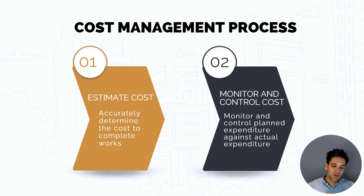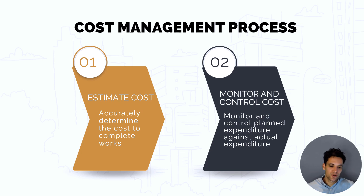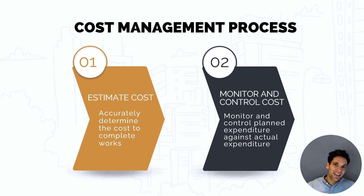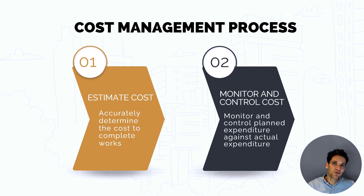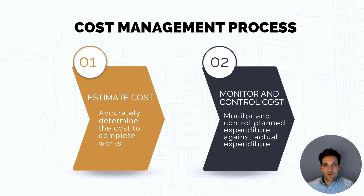We can break down the construction cost management process into two sub-processes: the estimate cost process and the monitor and control cost process. Estimating costs is first working out accurately how much something is going to cost to do. Then once we go to deliver the project, we need to monitor, control, and manage costs to ensure we complete the project for less than what we originally estimated.